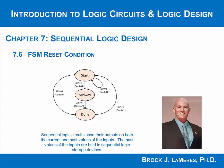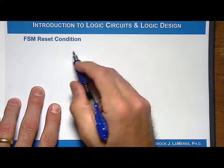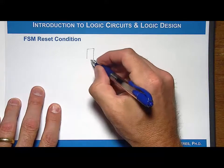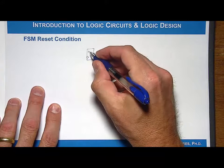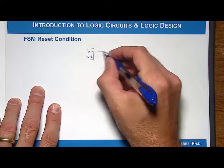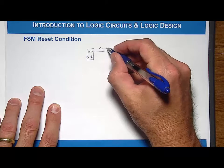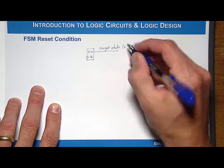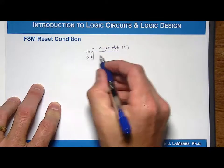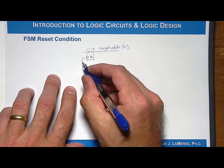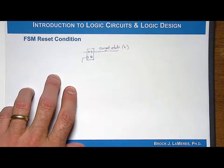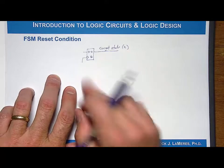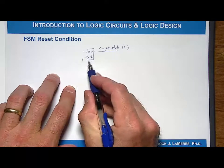Let's discuss the finite state machine reset condition. We've already examined how you build a finite state machine with D flip-flops holding the state — the current state code. You have D, Q, and Q-bar, and this represents the current state. This would be the current state code for whatever bit it is; we'll just call it X. We haven't really looked at what this value is going to be, because we've glossed over the fact that the reset line isn't there.